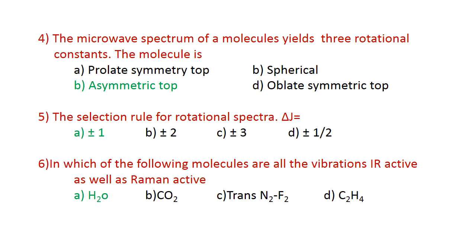Question number four: the microwave spectrum of a molecule yields three rotational constants. The molecule is an asymmetric top molecule, which has three different moments of inertia in three directions. If you have three rotational constants, A is the correct answer. The selection rule for rotational spectra is delta J equals plus or minus 1. A is the correct answer.